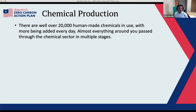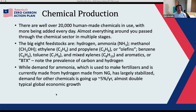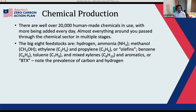On to chemical production — I'll keep this very short; there's a lot more in the report. There are well over 20,000 human-made chemicals in use with more added every day. Almost everything around you has passed through the chemical sector at one or multiple stages. The eight big feedstocks are: hydrogen, ammonia, methanol, ethylene, propylene — collectively called olefins — and the cluster of benzene, toluene, and mixed xylenes. These build upon one another, with carbon and hydrogen prevalent throughout.